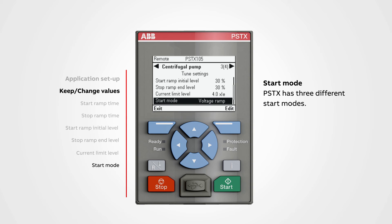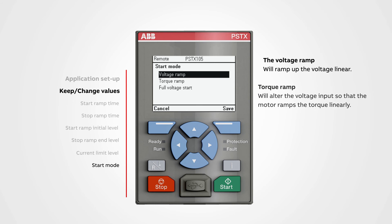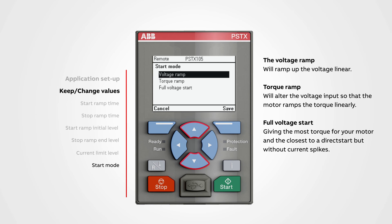Start mode: PSTX has three different start modes. To change the setting, push edit. The voltage ramp will ramp up the voltage linearly — the most common ramp for soft starters. The torque ramp will alter the voltage input so that the motor ramps the torque linearly; this ramp will start the motor more gently. The full voltage start is the most powerful, giving the most torque for your motor and the closest to a direct start but without current spikes. Use the navigation buttons to change the value, then push save.